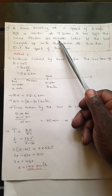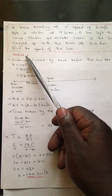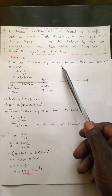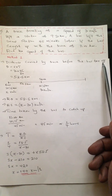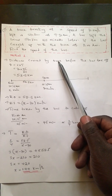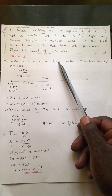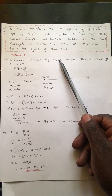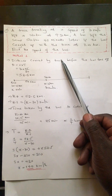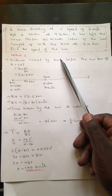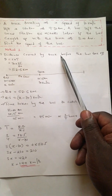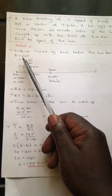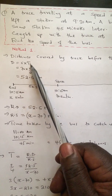I'll show the working using two methods. For the first method, I want to calculate the distance covered by the truck just before the bus took off. This is what I always call the relative distance — the distance between any two bodies when they first start moving together.